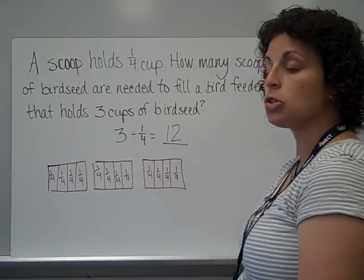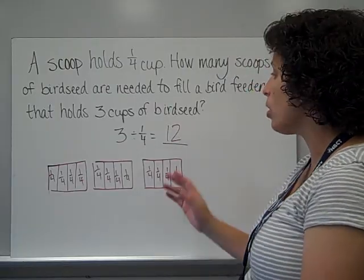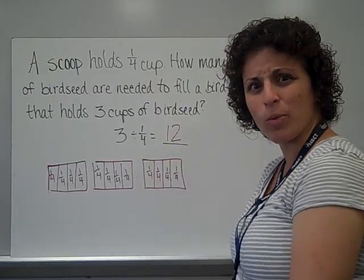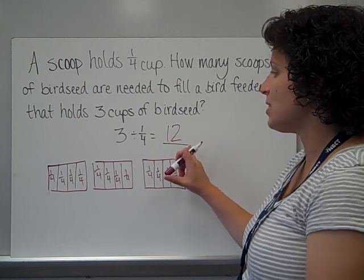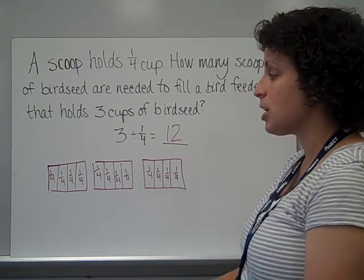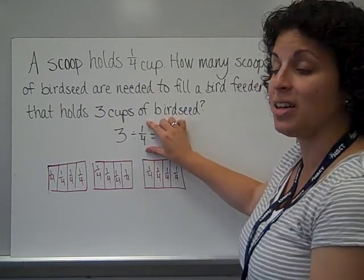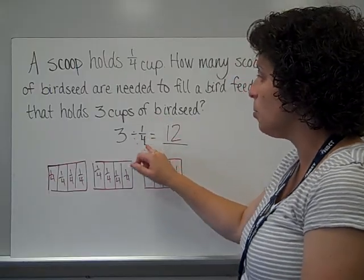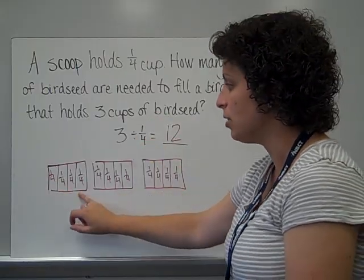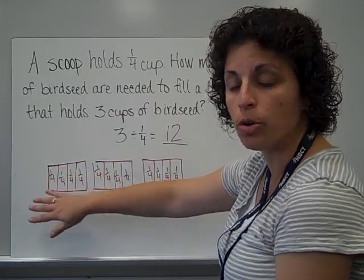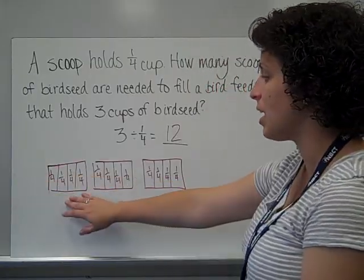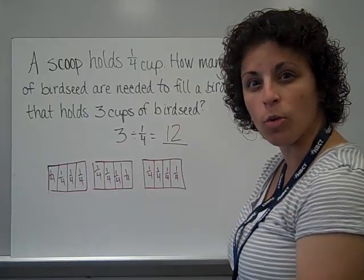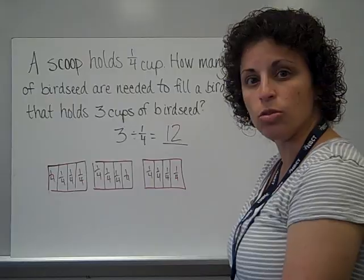So my quotient is how many fourths — there were 4 here, 4 more, and 4 more, so that is 12. Now this quotient is larger than what we started with, and normally when we divide, our quotient gets smaller. The reason it did not get smaller here is because I'm dividing by a number that is less than 1 — a fraction. It takes more of a fraction to fill up the whole cup than it would if this were a whole number, and that's why my quotient is larger.